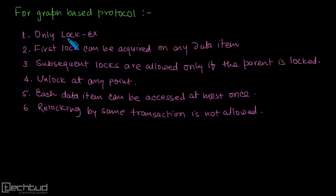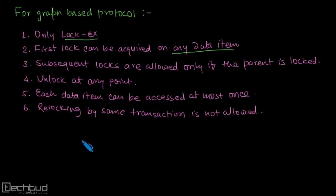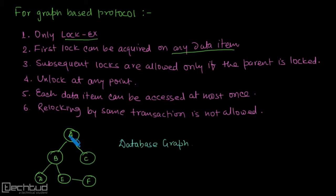The following are the protocol rules of graph-based protocol. The first rule is that we only use exclusive locks — there is no shared lock here. The second rule is that the first lock can be acquired on any data item. The partial order of access can create a tree, which we call the database graph. For example, in our database graph: first A is accessed, then B, then C and D after B, then E and F after E — it forms a tree. According to the second rule, the first lock can be acquired on any database item even if there is an order.